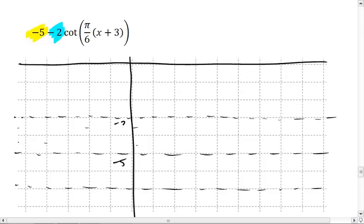Negative 5, negative 3, and negative 7. We know that our period, 2 pi divided by pi over 6, which is the same as 2 pi times 6 over pi. Pis cancel, leaving us with a period of 12.